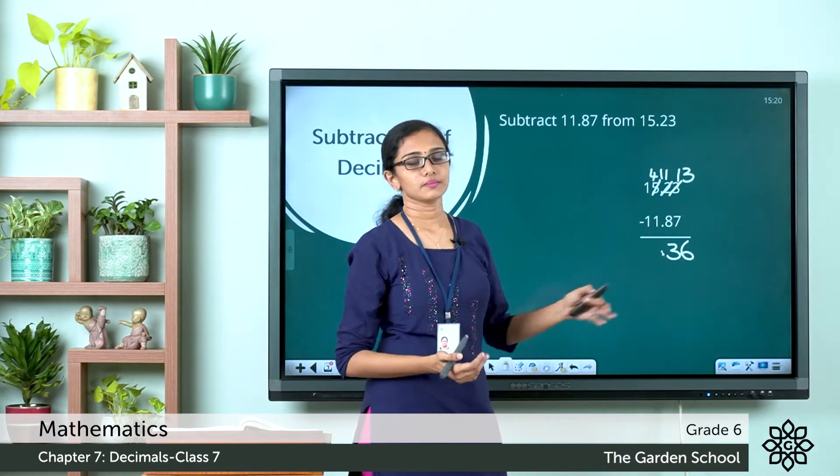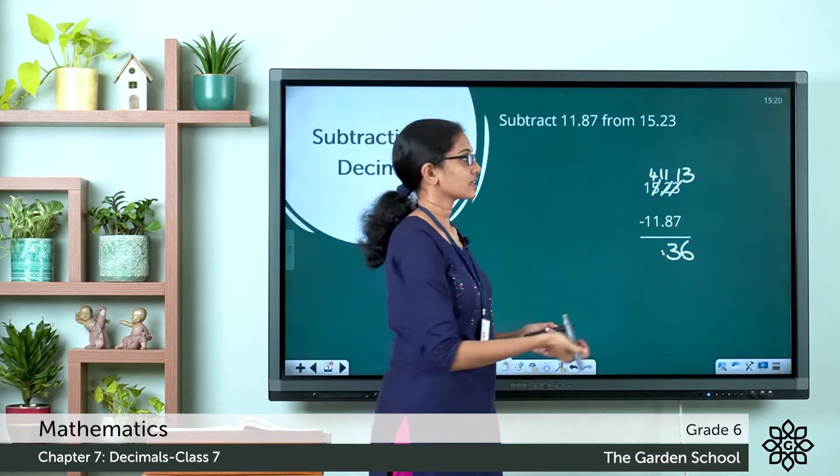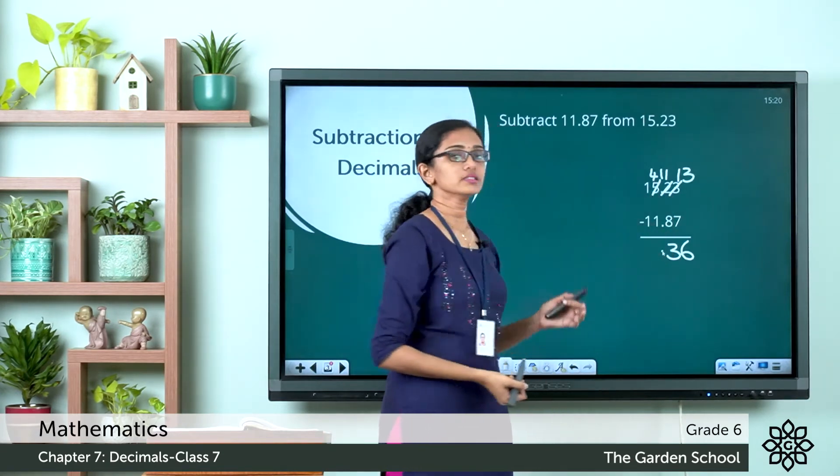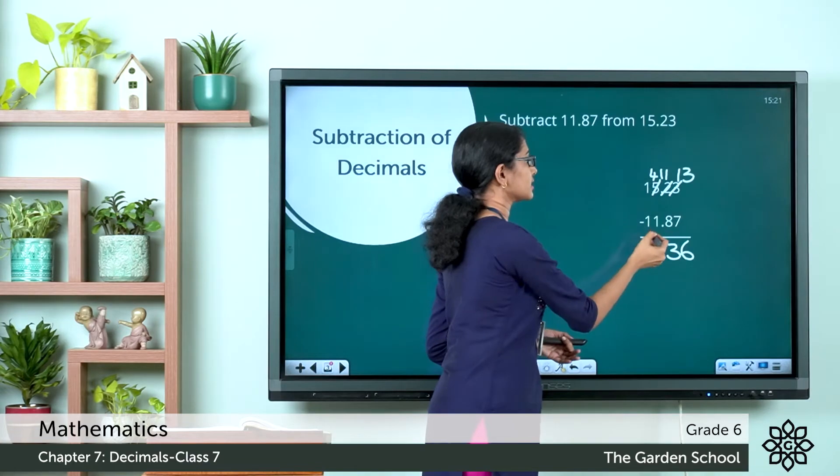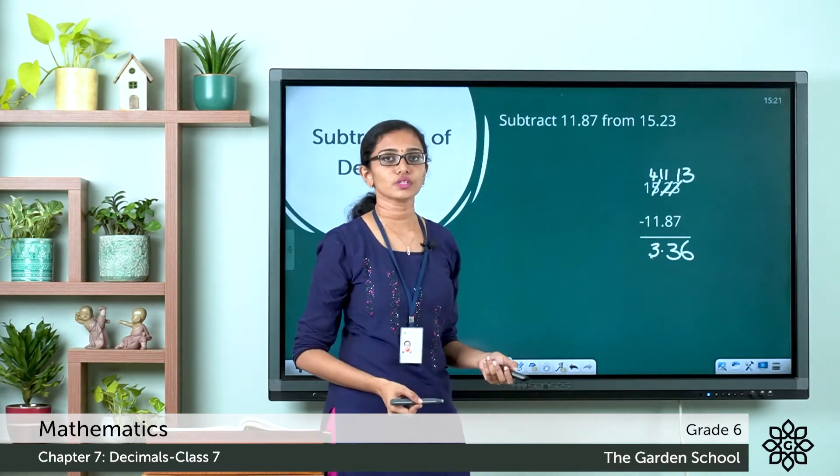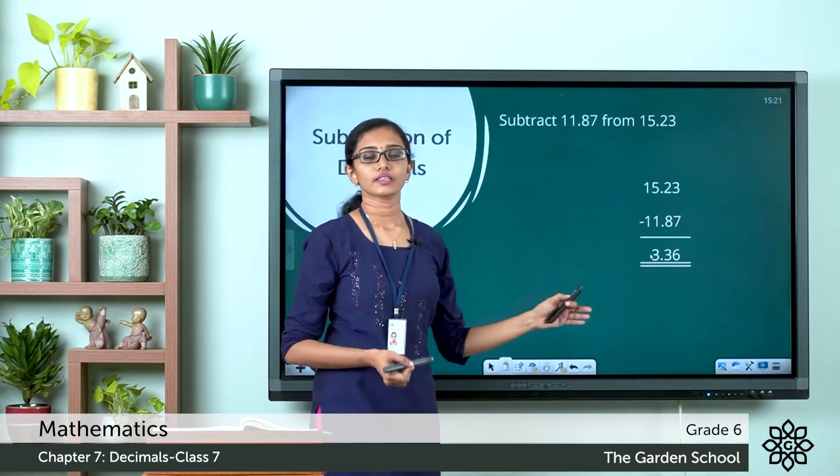Now we are done with the decimal part. Now coming to the whole number part, here we have 4 ones minus 1 one and that is equal to 3 ones and here it is 1 minus 1 which is equal to 0. So what is the difference? The difference is 3.36.